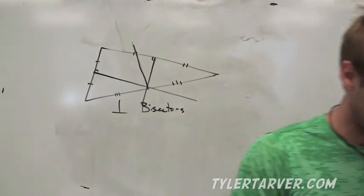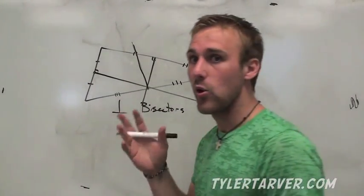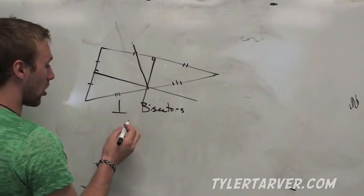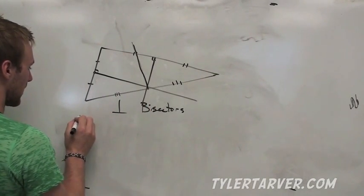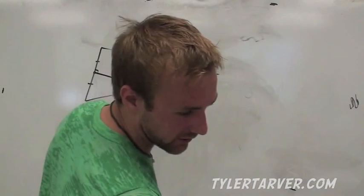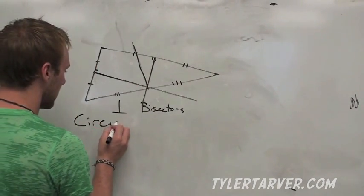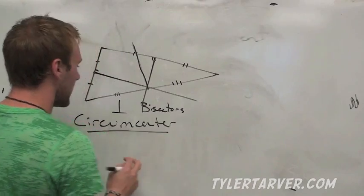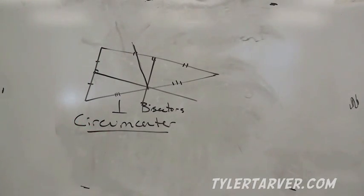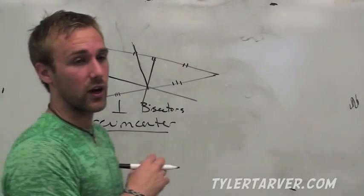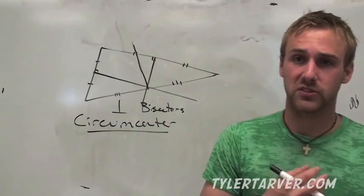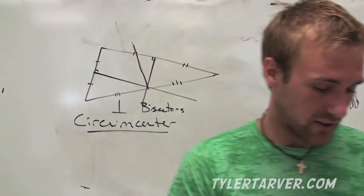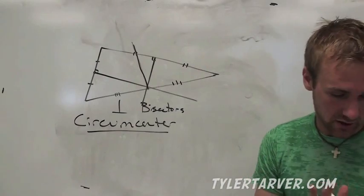Now, there's a special name for that. When the perpendicular bisectors of a triangle meet, it is called the circumcenter. It's called the circumcenter of the triangle. Now, that's only when the perpendicular bisectors all hit. That's the point of concurrency. It's called the circumcenter. There's going to be a different name for different stuff and we're going to do other things.